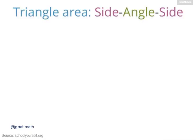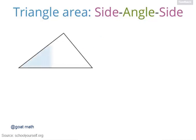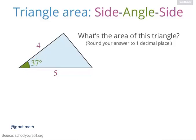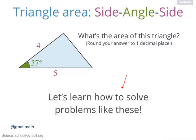Let's figure out a way to find the area of a triangle using two sides and the angle between them. For example, take a look at this triangle here, and suppose we want to find its area. Let's say this side has length 5, this side has length 4, and we also know that the angle between these two sides measures 37 degrees. There's a way to find the area of this triangle, so give this question a shot if you want. Otherwise, click here to get started on this lesson.